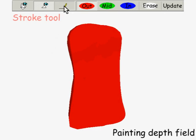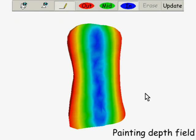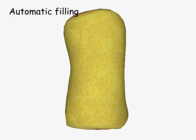Finally, the stroke tool is used to draw the radial axis of the model. After the depth field is constructed, the system fills the model with the texture.